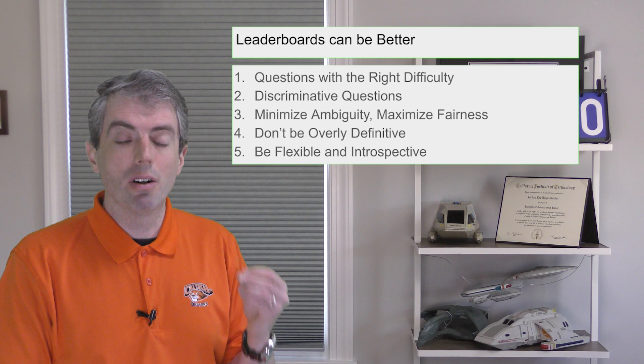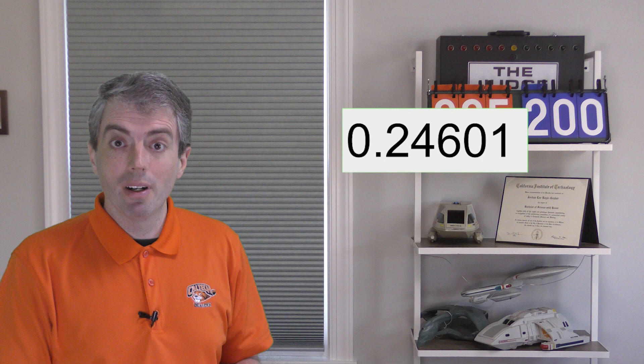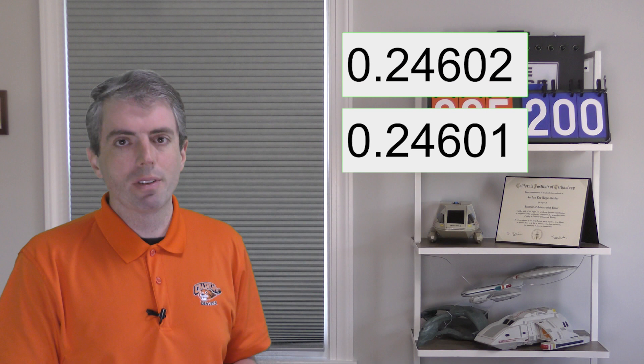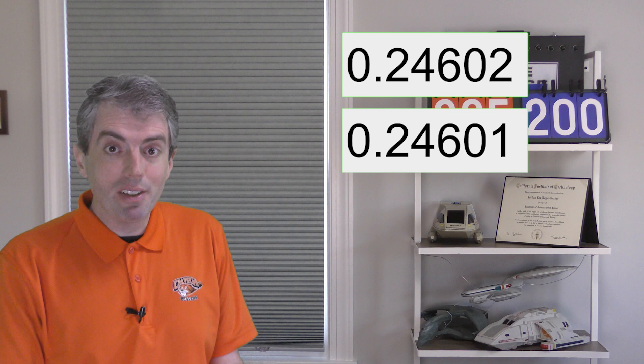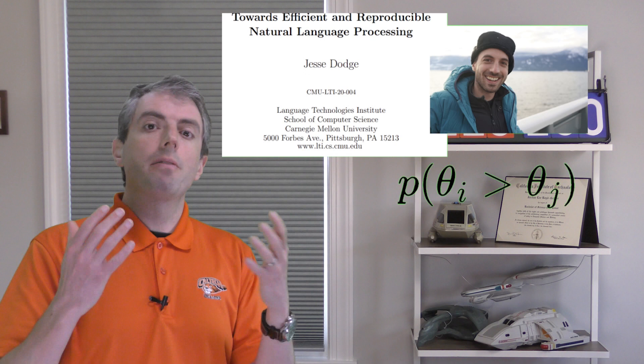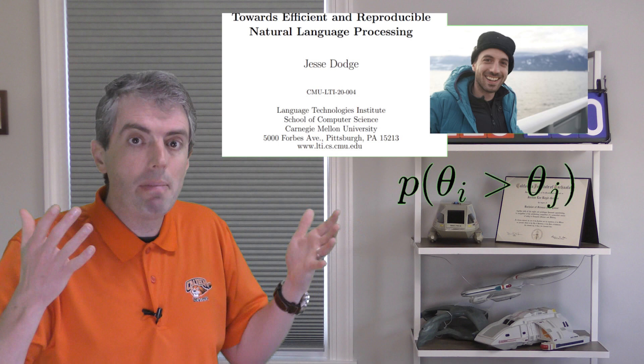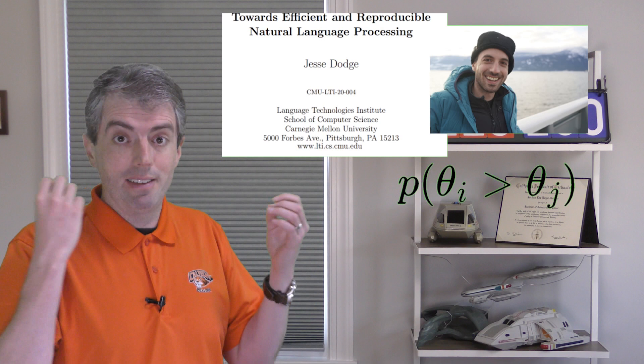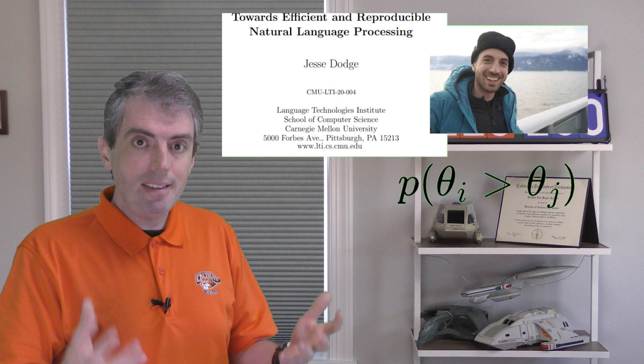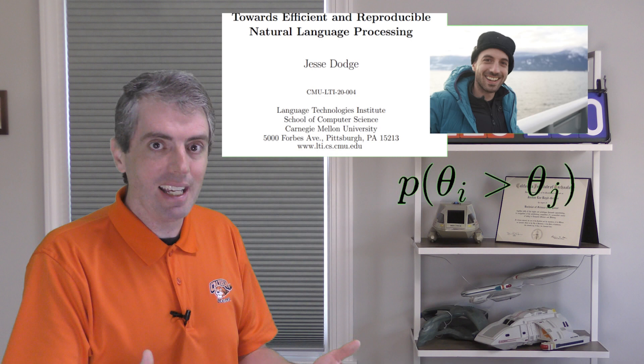Don't be overly definitive. Let's say the current top score on a leaderboard is 24601. You run your system and get 24602. Do you pop the champagne? You should be skeptical that you are actually the winner. This is part of the reproducibility crisis in natural language processing — Jesse Dodge talks about this in his recent thesis. IRT provides an alternative through a big Bayesian model of random variables encoding how smart each system submitted to the leaderboard is. You could just ask: what's the probability that the skill of answerer i is greater than the skill of answerer j? For a one-point difference, the answer is probably going to be close to zero.